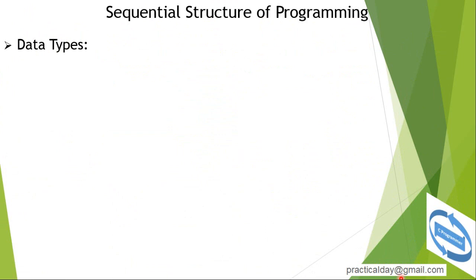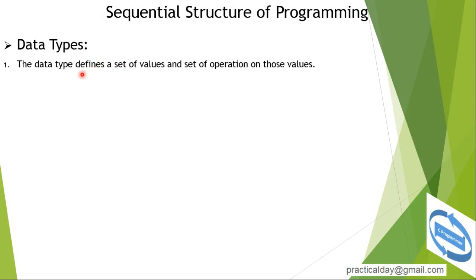Today we learn about the sequential structure of programming. What is a data type? The data type defines a set of values and a set of operations that are performed on those values.